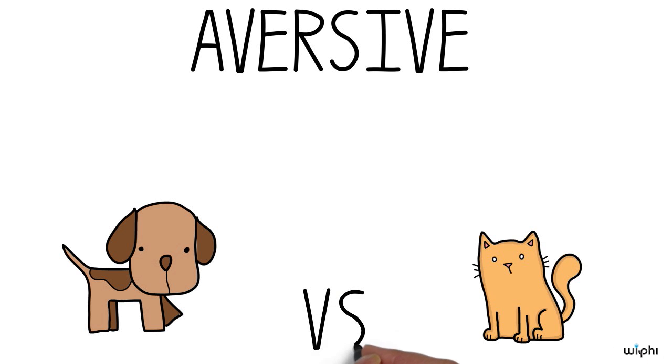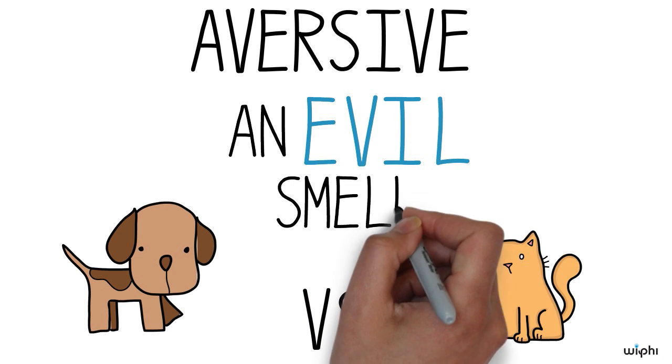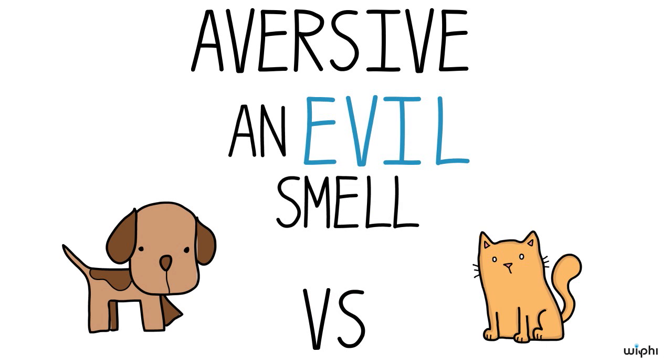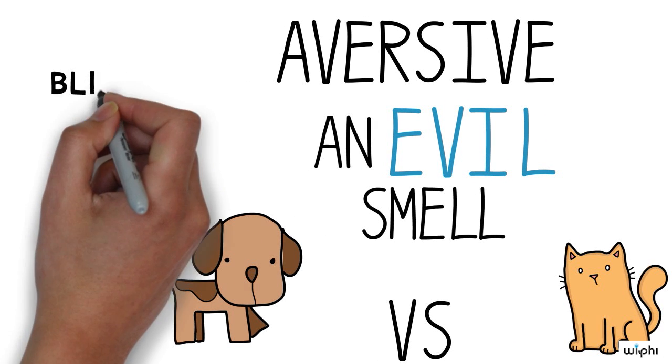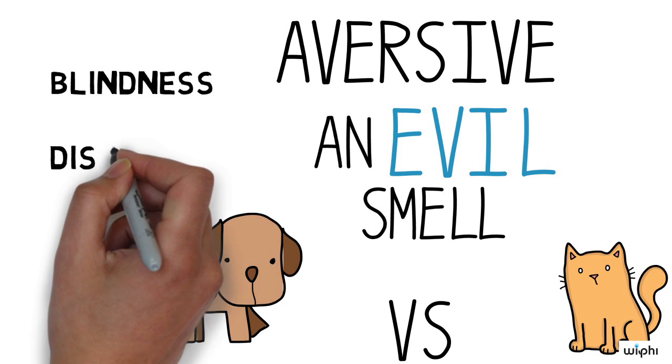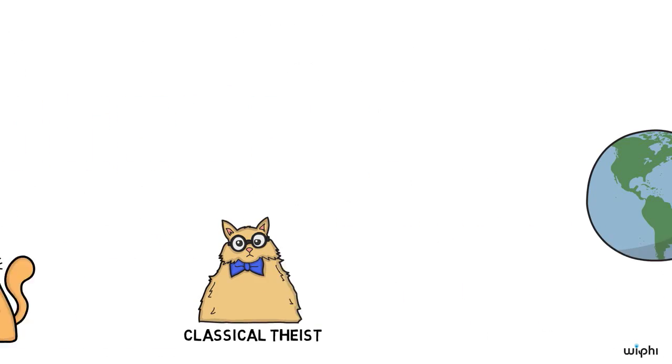In a similar way, a smell that is aversive may be called an evil smell. An evil smell is given as an example of the use of the word evil in the Oxford English Dictionary. But neither the smell of rotten eggs nor the sensation of pain is evil in the same important sense in which blindness, disease, and sin are evils.